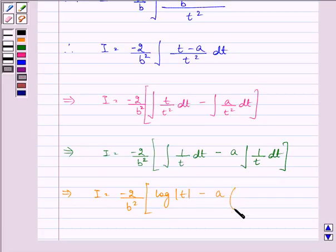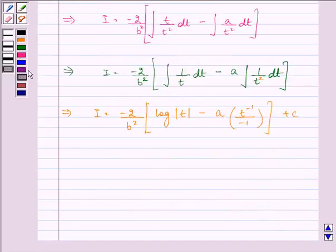Minus a into t raised to the power minus 1 upon minus 1 plus c. I is equal to minus 2 upon b square. Log t equals log